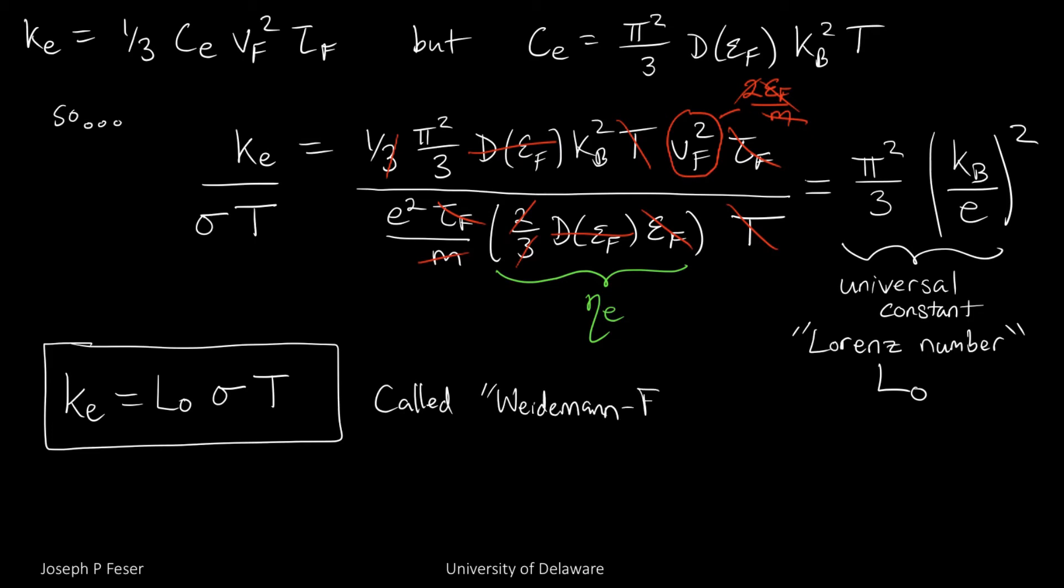The only thing that shows up is the Boltzmann constant and the fundamental charge. So the constant that shows up on the right-hand side is called the Lorenz number.